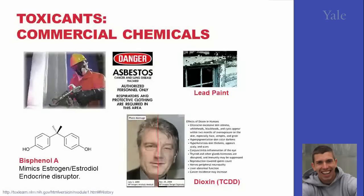We will now talk about some toxicants that are not naturally occurring, but have been produced by human activity, such as asbestos. Asbestos is a form of fiber — often the most common forms are crystalline fibers — which when inhaled is deposited onto your lungs, and is associated with cancer over time.